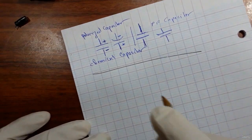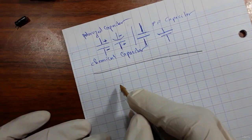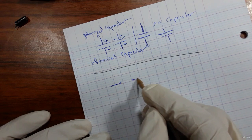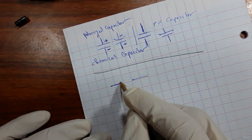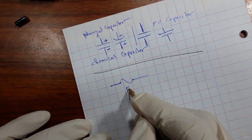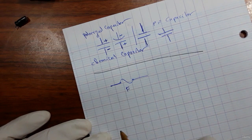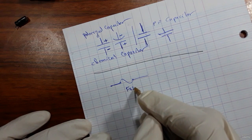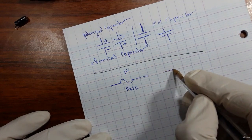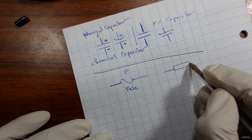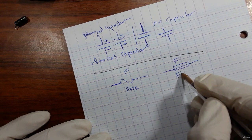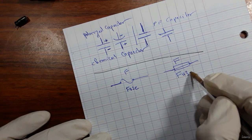Let's see the fuse. The fuse, as you see — this is the symbol for the fuse. This is a fuse symbol. F means fuse. You can also find this symbol as well. This is also the symbol for the fuse.